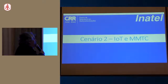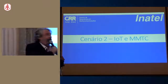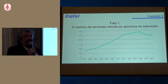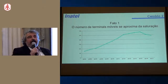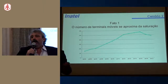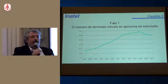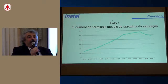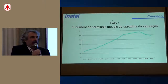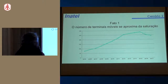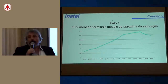O segundo cenário é o de IoT e Machine Type Communication. O primeiro fato relevante é que o número de terminais móveis se aproxima da saturação — praticamente todo mundo já tem um terminal móvel. Então, se a operadora quer aumentar seu faturamento, não conseguirá fazê-lo aumentando o número de usuários. Dados do Brasil mostram crescimento até janeiro de 2015 e redução do número de terminais desde então.